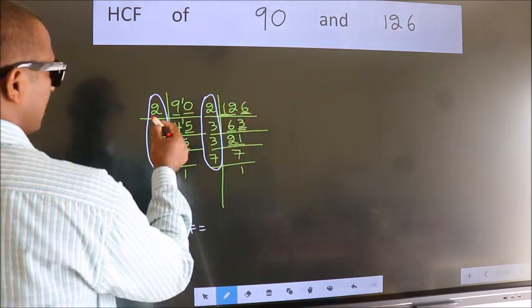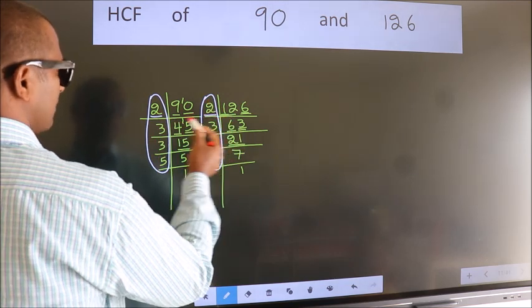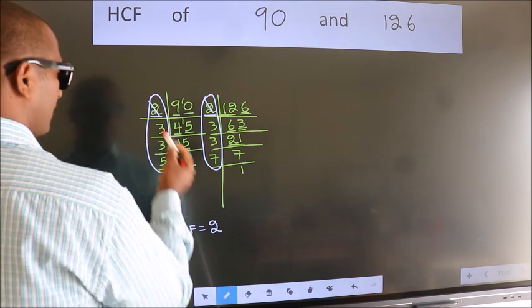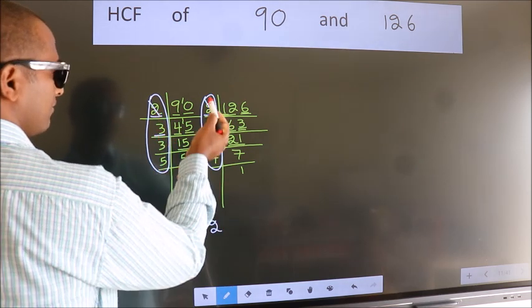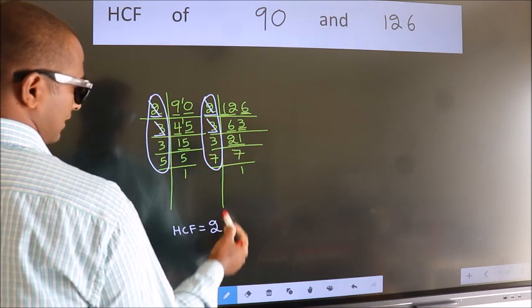Starting with the number 2. Do we have 2 here? Yes. So cut 2 right here. Next number 3. Do we have 3 here? Yes. So cut 3 right here.